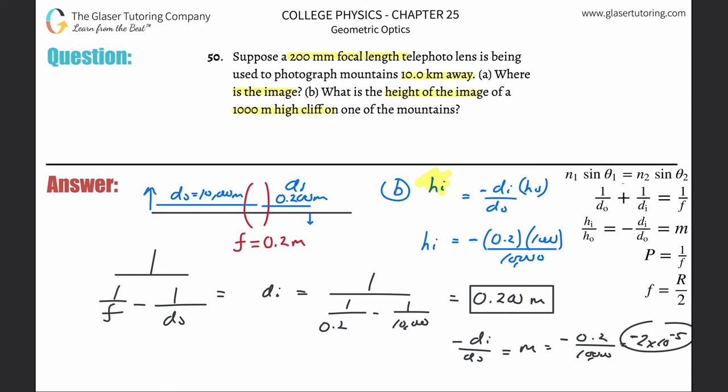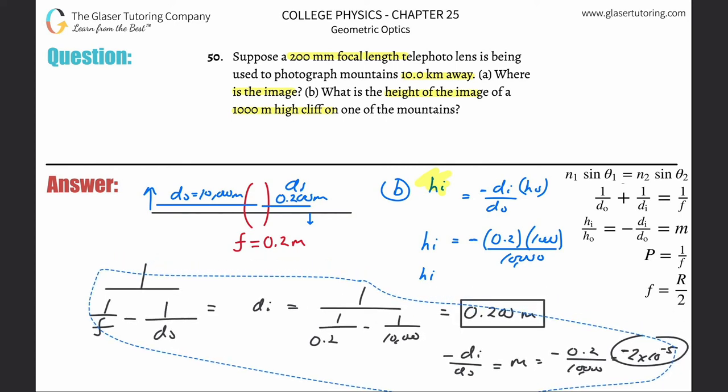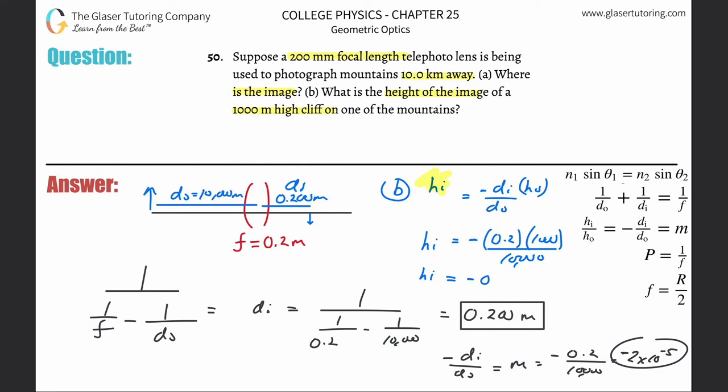The image height here is going to be -0.0200 meters. That works out to be about negative 2 centimeters. The negative is also telling us the direction, that it's pointing down. So the height of this thing is going to be 0.02 meters, inverted. The height over here was 1,000 meters; we compress that down into basically 2 centimeters.